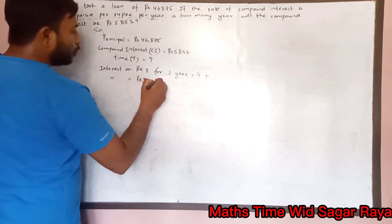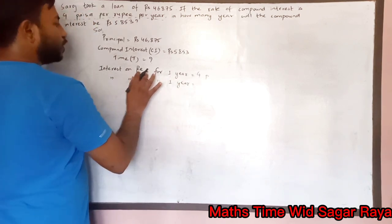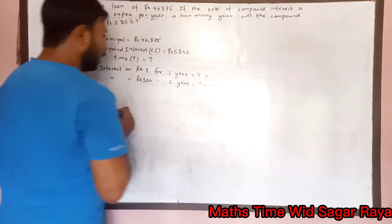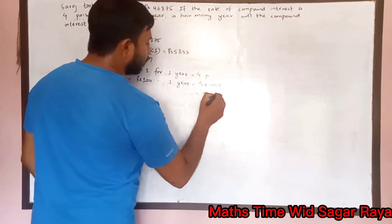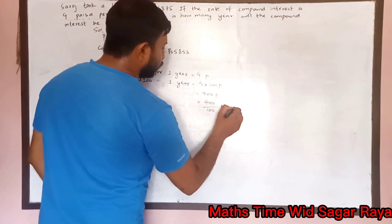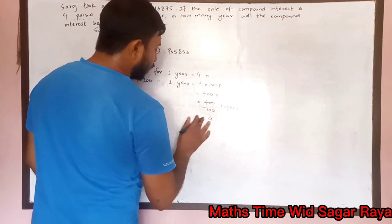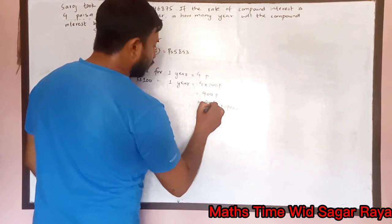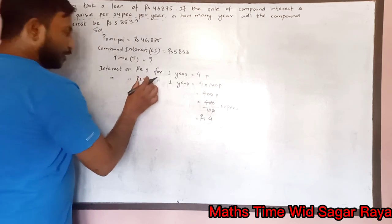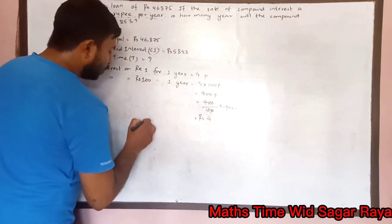Interest on rupees 100 for one year: if for rupee one you pay four paisa, then for rupees 100 you pay 4 × 100 = 400 paisa. Dividing 400 paisa by 100 gives rupees 4. So for rupees 100 in one year, you are paying rupees 4.